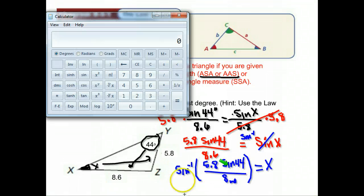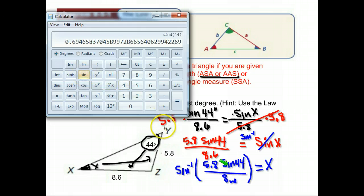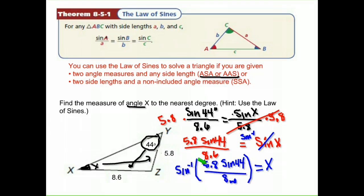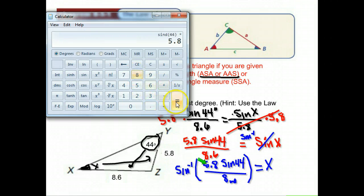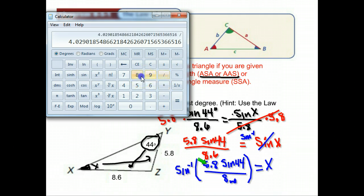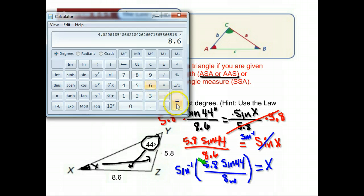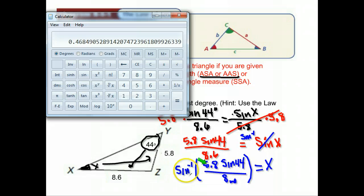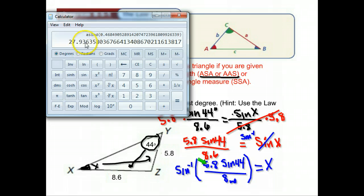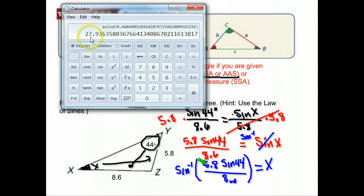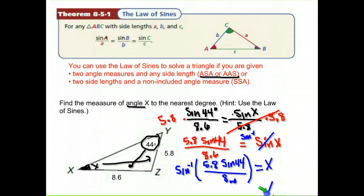Start one thing at a time. First do the sine of 44. Then multiply by 5.8. Now divide by 8.6. Now we have 0.46849. We've done everything inside the parentheses here. All we need to do now is the inverse sine. So we have the number in our calculator already. I'm going to push inverse and then sine, and I get 27.936. They wanted me to round to the nearest degree. 27.9 would round up to 28.